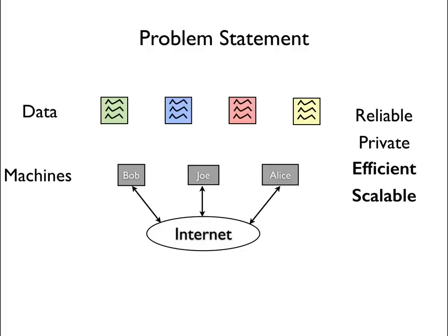The problem statement we talked about last time was how to map different pieces of data over various machines connected over the internet in a way that would be both reliable, private, efficient, and scalable. But we focused on the last two parts of it, which are efficiency and scalability.